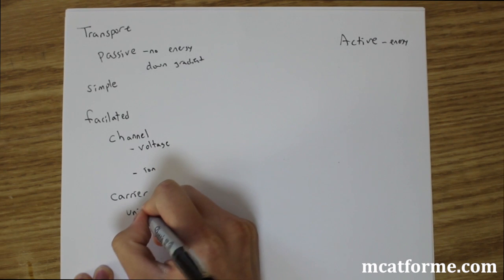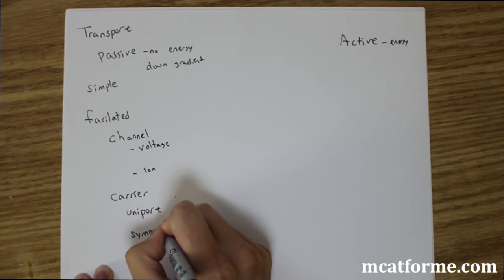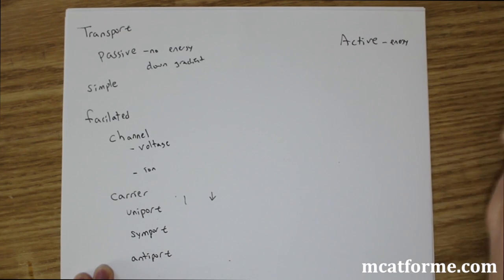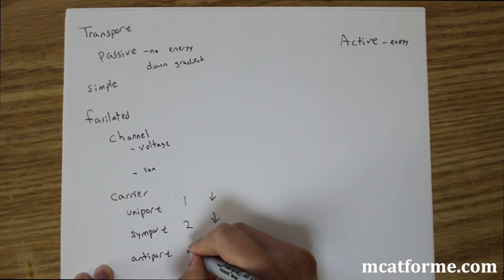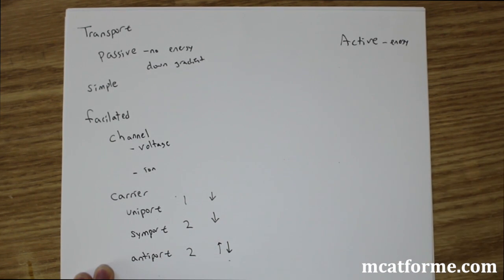And so carriers, we have uniport, we have symport, and we have antiport. So uniport transfers one molecule going down in one direction. Symport is two molecules down in one direction. Antiport is also two molecules but one going up, one going down.